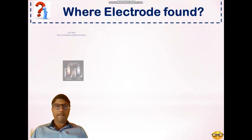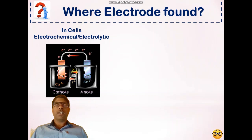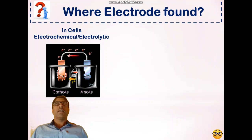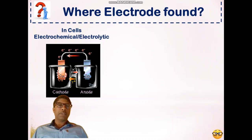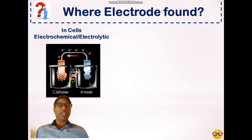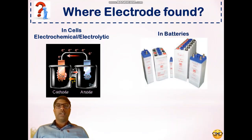Where are electrodes found? Electrodes are an important part of an electrochemical cell — the smallest device capable of conversion of electrical energy into chemical energy and vice versa. Therefore, electrodes are found in electrochemical cells, where chemical energy is converted into electrical energy, as well as in electrolytic cells, where electrical energy is converted into chemical energy.